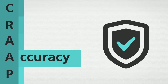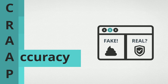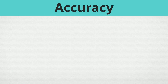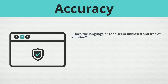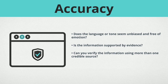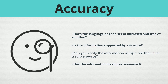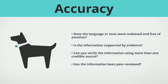Accuracy. How true is this information? Accuracy is a hot topic these days. There's a lot of confusion over what is fake and what is real when it comes to information. When checking for accuracy, ask yourself: does the language or tone seem unbiased and free of emotion? Is the information supported by evidence? Can you verify the information using more than one credible source? Has the information been peer-reviewed? Peer-review is the evaluation of a work by other experts in the same field who check the work and research prior to its publication. The peer-review process is important because it serves as quality control. The experts reviewing the work don't just fact-check — they also check for clarity and methodology. If the work involves people or animals, the peer-review may even check for ethical or safety concerns.